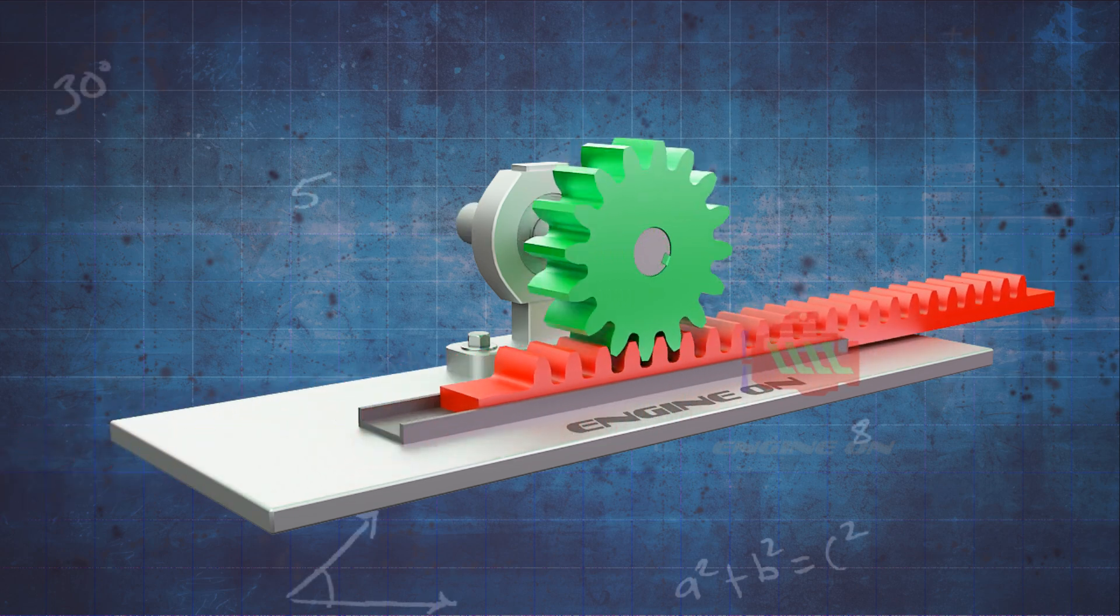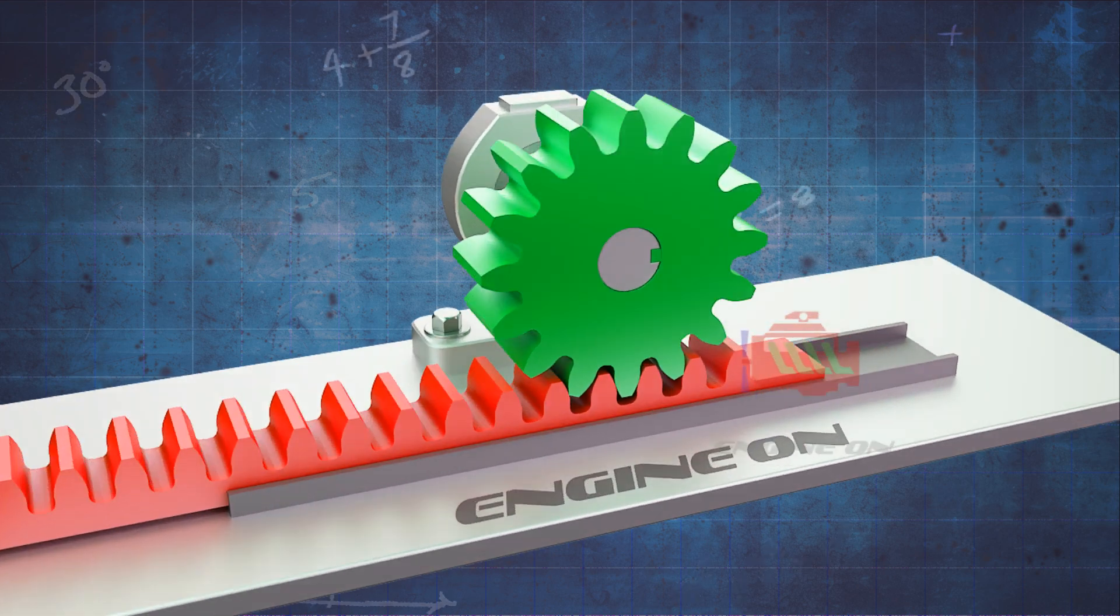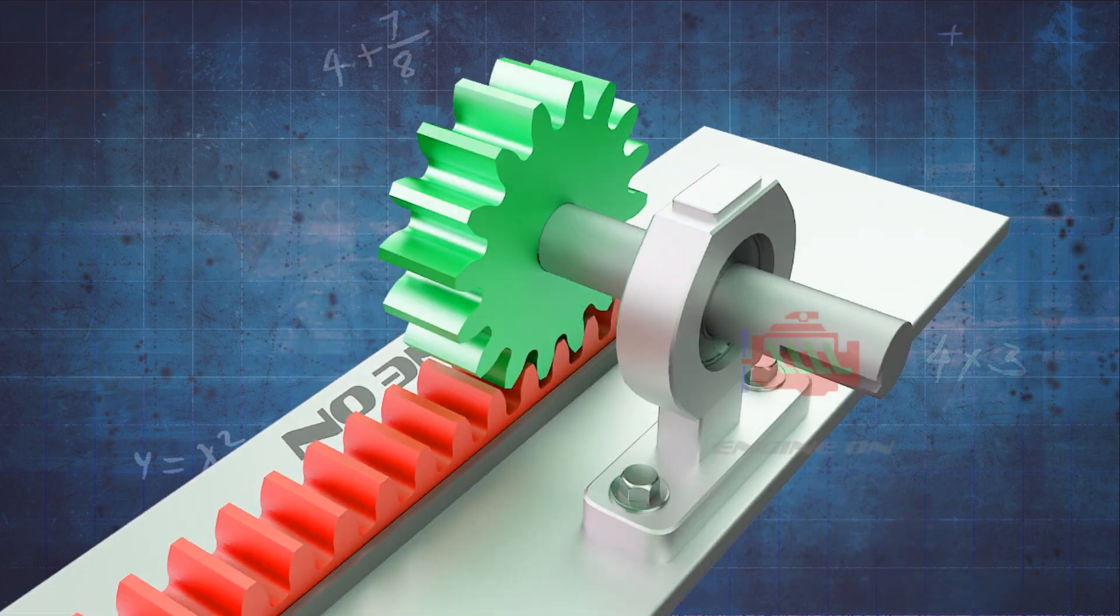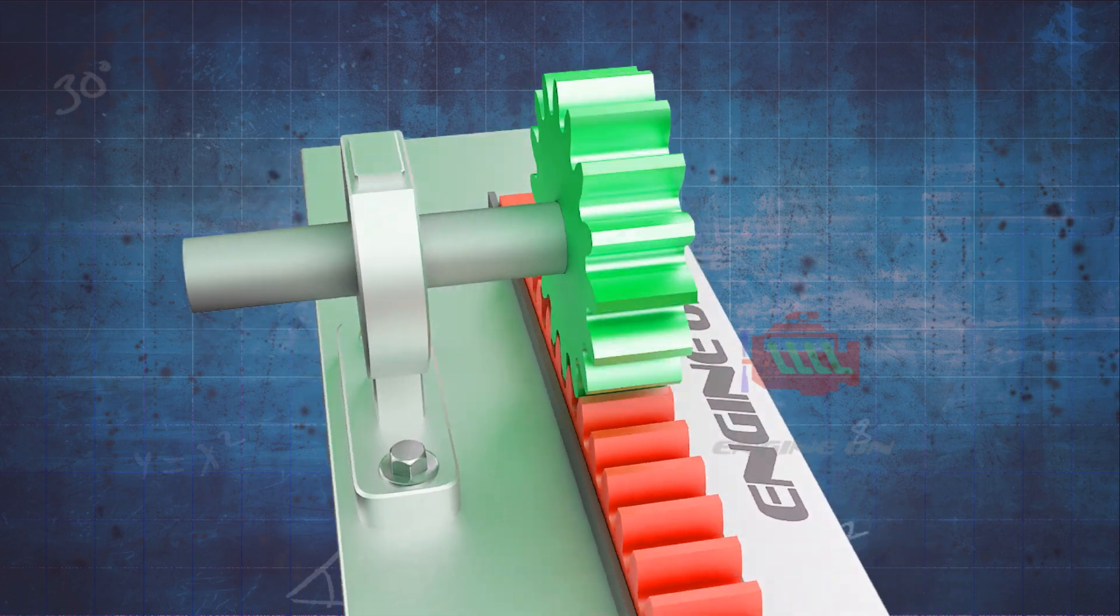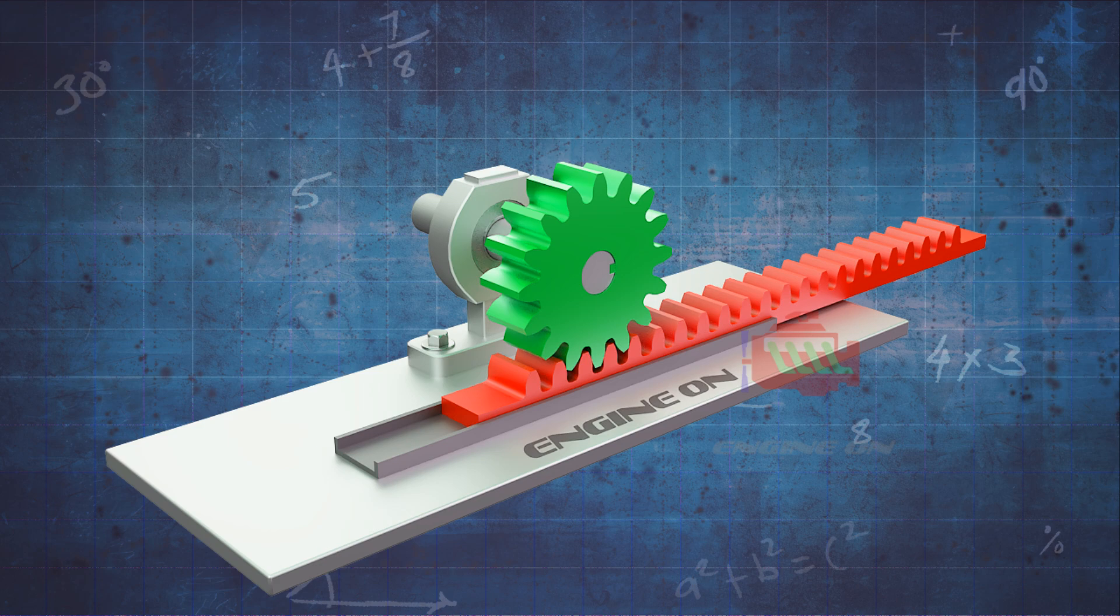Rack and pinions are one of the oldest and simplest mechanisms used for converting rotary motion into linear motion. They are extremely versatile and can be used in a wide range of applications, from simple hand-operated machinery to highly dynamic, ultra-precise machine tool applications.